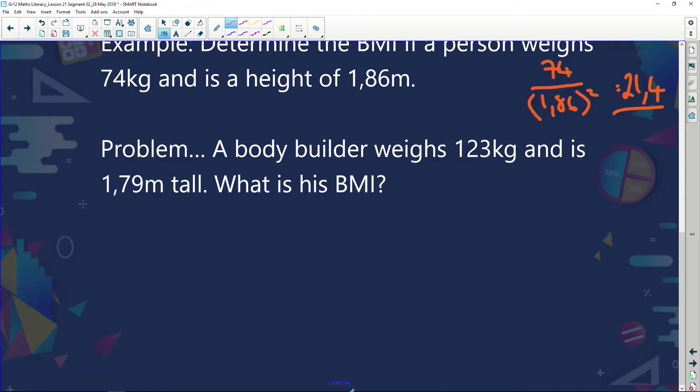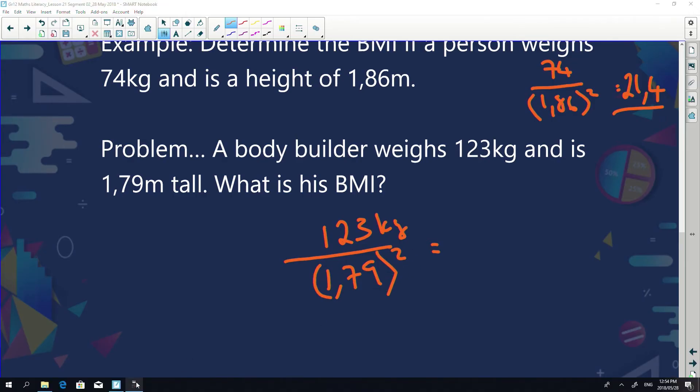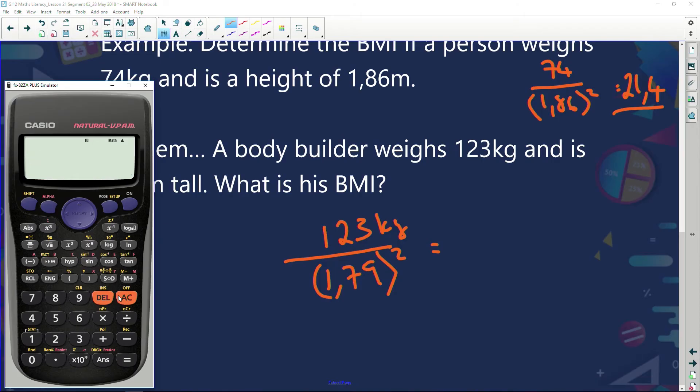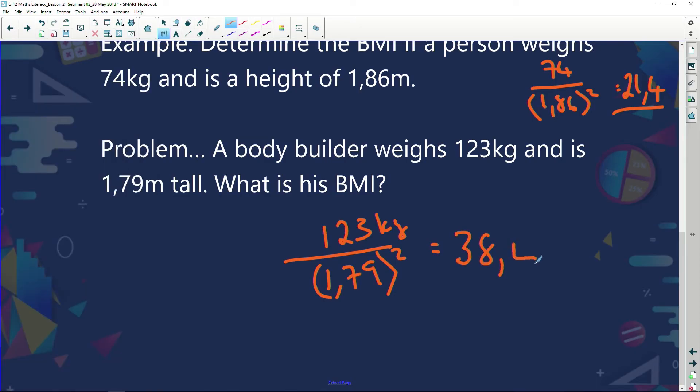So sometimes it'll give you a very high BMI and you'll think, oh yo yo yo, I am totally obese, but you're actually not. Let's have a look at this example. Here we've got a bodybuilder - just pretend it's me - he weighs 123 kilograms and he's 1.79 meters tall. To calculate BMI, we take the mass in kilograms divided by the square of the height in meters. Again, my calculator is going to do this: 123 over 1.79 squared, and we get 38.4.